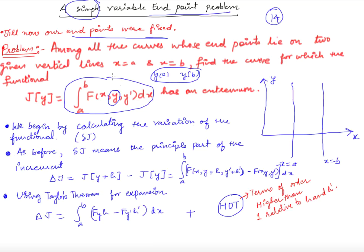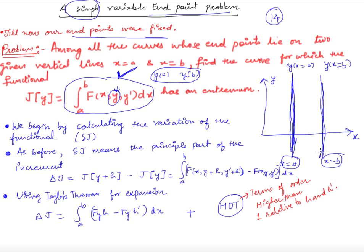The problem is: we want to find the extreme values of a functional where the input functions y are such that y(a) and y(b) should lie along a certain line — they can take any value on this line. So y at x=a can be anything and y at x=b can also take any value. This is the free boundary we have now, and we want to look at the extreme values of this functional subject to these boundary conditions.